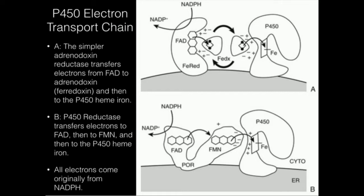Remember, NADPH transfers electrons in the form of a hydride anion. So when FAD picks up the electrons from NADPH, it's getting two electrons. That's why we talk about one electron going to the P450, then it comes back and gets the second electron. The NADPH to FAD is one transfer of two electrons, whereas from FAD to the iron-sulfur center of adrenodoxin and then ultimately to the heme, that's two transfers of one electron each.